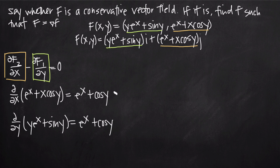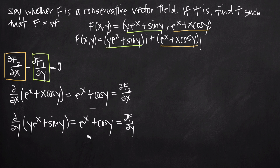We now have both values: the partial derivative of F sub 2 with respect to x equals e to the x plus cosine y, and the partial derivative of F sub 1 with respect to y also equals e to the x plus cosine y. Subtracting the second from the first gives zero, so the scalar curl of F is equal to zero.